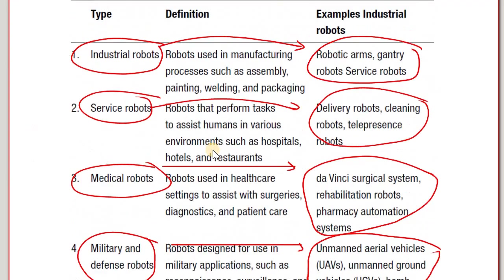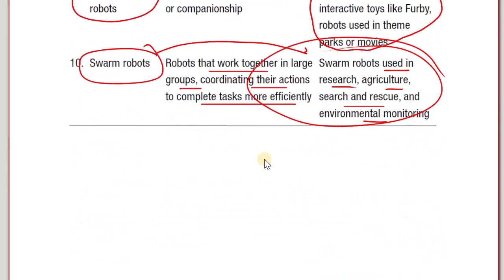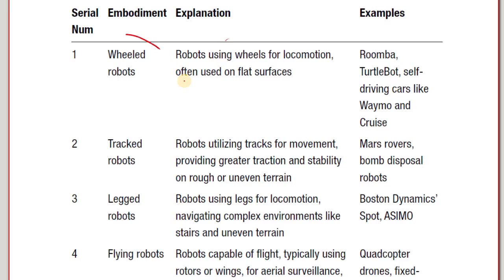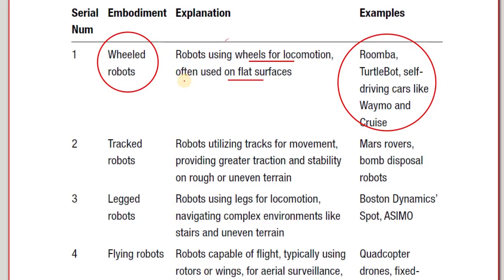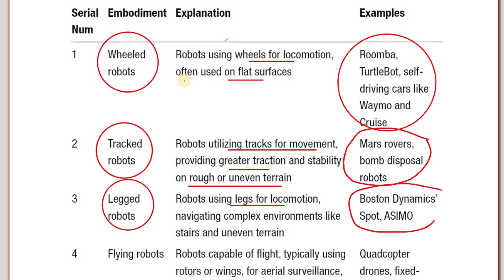We have categorized robots based on their use in various sectors. We can also categorize based on embodiment. Wheeled robots use wheels for locomotion, often used on flat surfaces — examples include the Roomba, TurtleBots and self-driving cars like Waymo and Cruise. Tracked robots utilize tracks for movement, providing greater traction and stability on rough terrain — examples include Mars robots and bomb disposal robots. Legged robots use legs for locomotion — examples include Boston Dynamics' Spot and ASIMO.